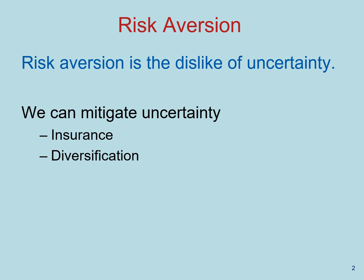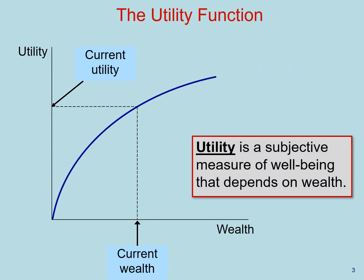One of them is insurance and diversification. For the remainder of this video, we're going to use a model of utility to explain what risk aversion is, and then we'll talk about ways to mitigate uncertainty. To understand risk aversion, let's use a model — the utility function.